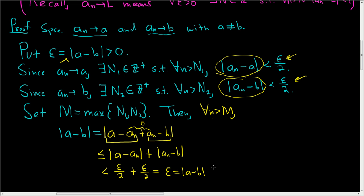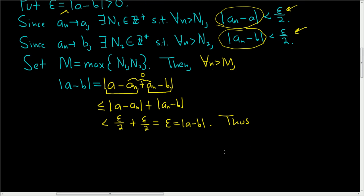So if we carefully look at what we have, we have the absolute value of a minus b, and we're saying that's less than the absolute value of a minus b. So that's impossible. So a contradiction. And that's it. I hope that made sense.